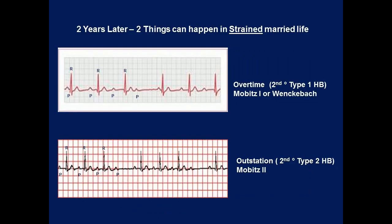Two things can happen in a strained married life. Rossley will give excuses that he has to work overtime; in fact, he is having an extramarital affair. The Pazia-Rossley relationship is getting distant — the PR interval lengthens — and suddenly one of the days, Rossley does not return home to Pazia. That is a dropped QRS. This is what we call Second Degree Type One — Mobitz One, or Wenckebach.